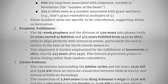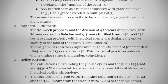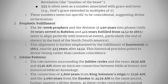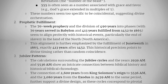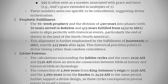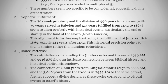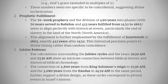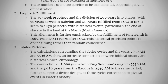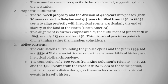The jubilee patterns and calculations surrounding the jubilee cycles — including the year 2939 AM, which is the end of Solomon's first year as king, and 5536 AM — show an intricate connection between biblical history and chronology. The connection of 2,600 years from King Solomon's reign to 5536 AM, and the 3,080 years from the exodus in 2459 AM to the same period, further support a divine design as these cycles correspond to pivotal events in Israel's history.